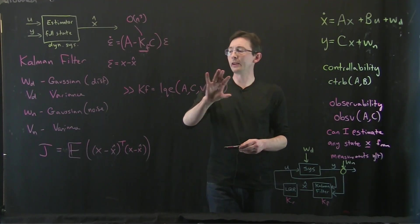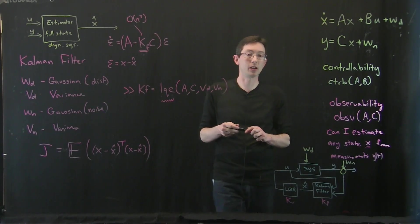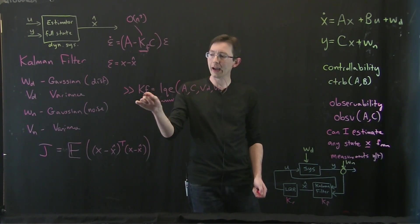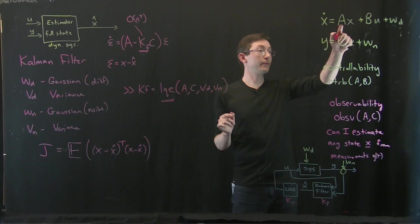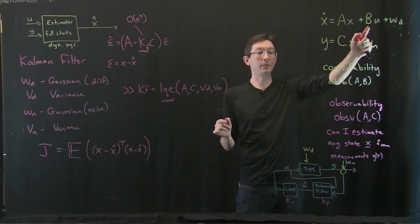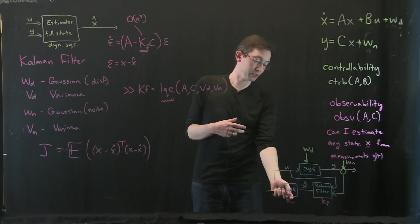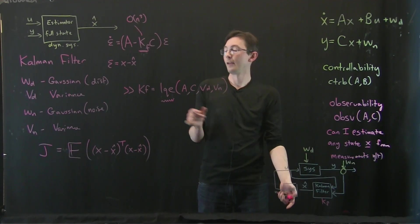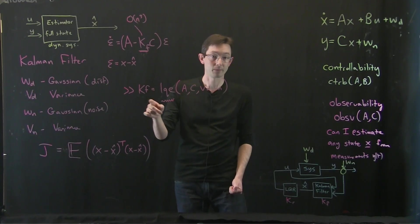Very similar. You can actually, a good exercise I would recommend you try: try to develop this Kalman filter gains using the LQR command. Use the fact that there's a duality between AB and AC. And try to massage this so that you can actually use this LQR command to solve the algebraic Riccati equation to get this Kalman filter.